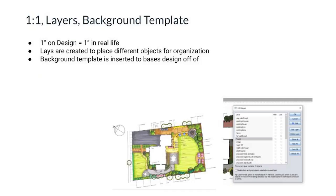The first thing we do with our design is insert the background layer. This gives us a template to base our design off of. Next, we set it to a one-to-one scale, which means one foot on our drawing equals one foot in real life. We do the same two steps in AutoCAD and Dynascapes.